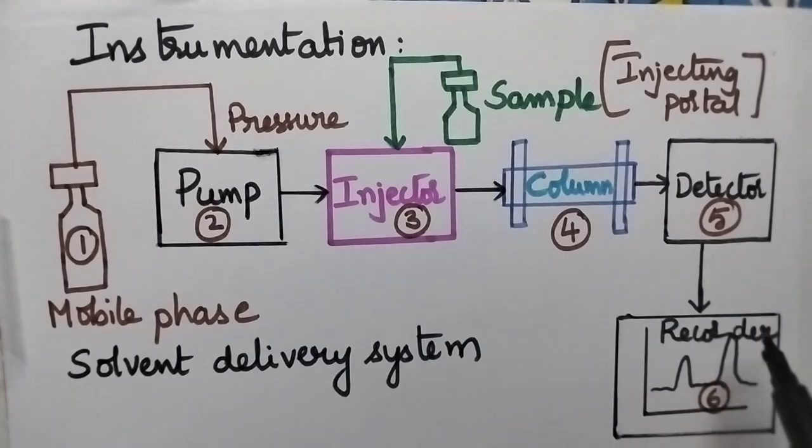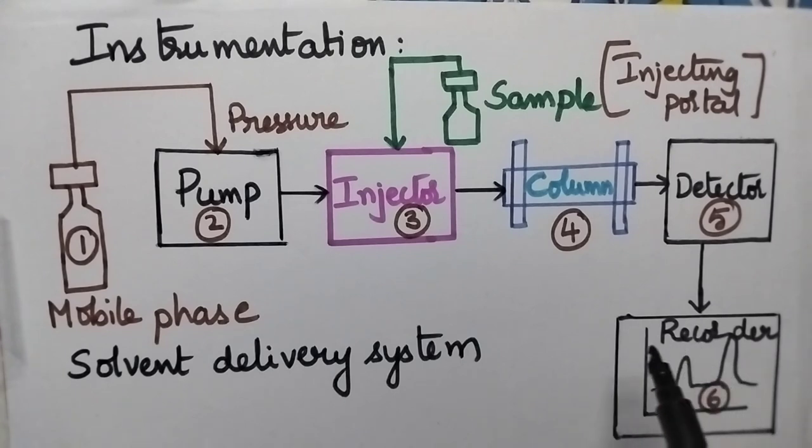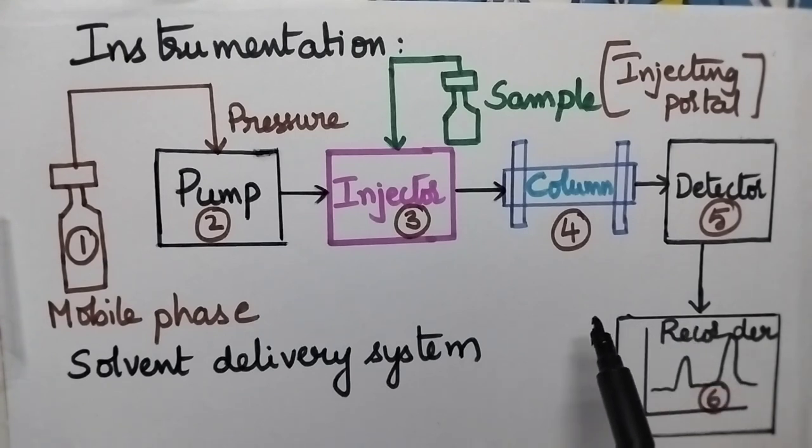A recorder system is connected to the detector and we get the corresponding spectrum. In this way it is possible to separate the components of a sample with high resolution and better efficiency.